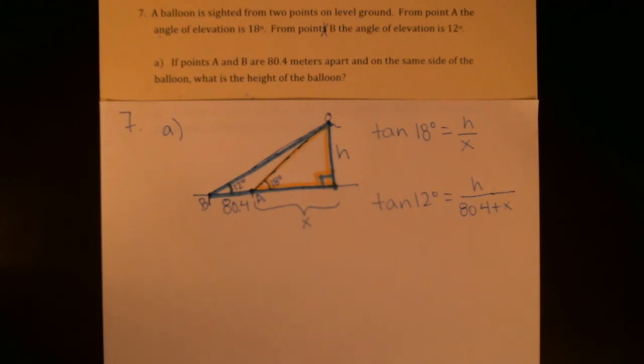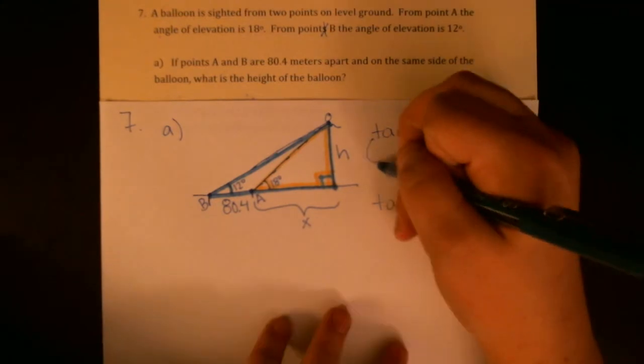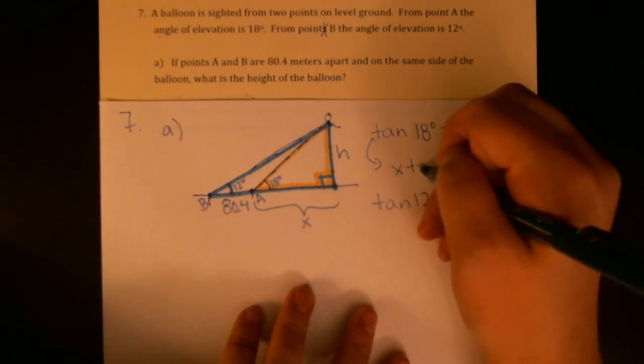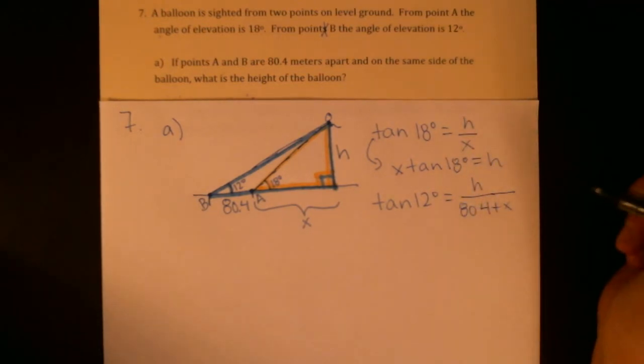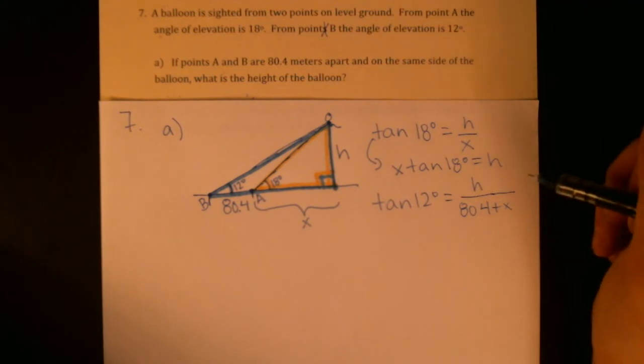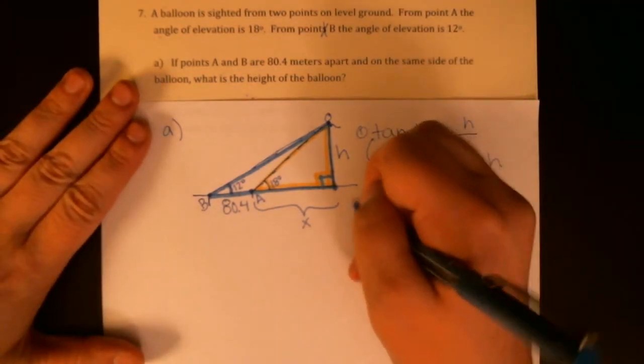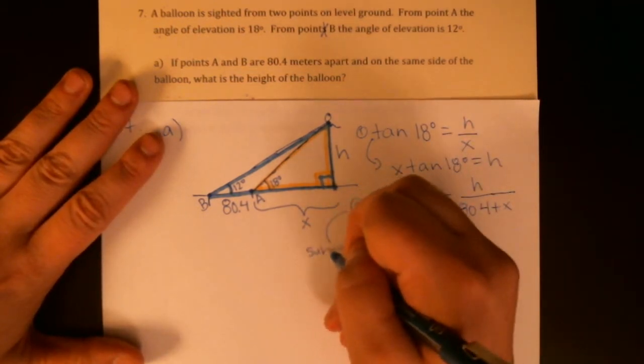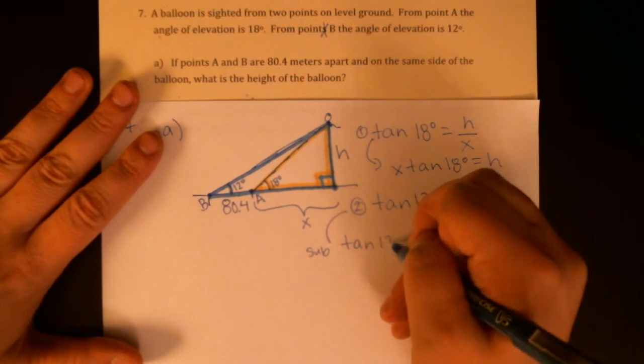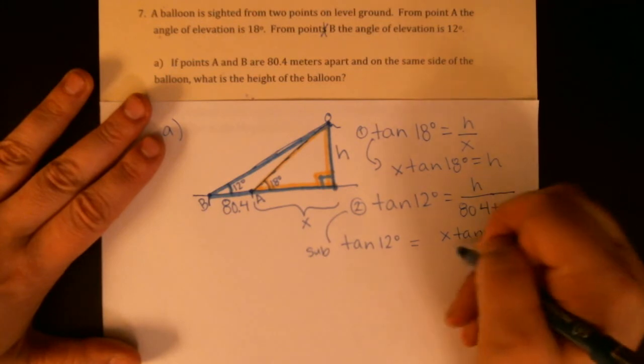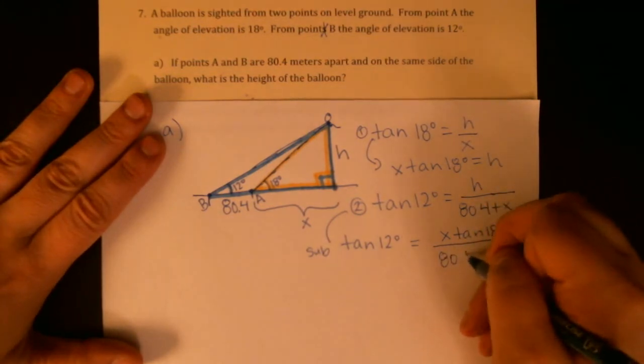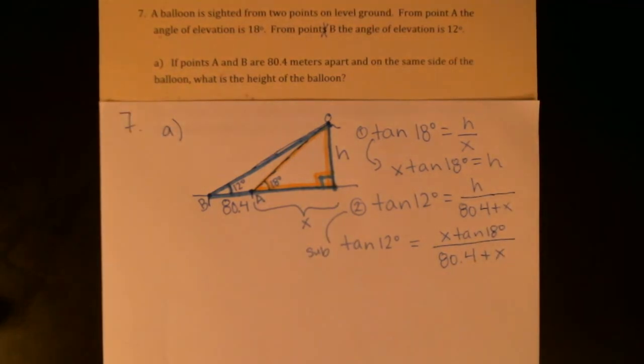I would do this with substitution, so I would say let's just take the first one. It's really easy. Let's solve for h—you can solve for whichever side you want, but h looks the easiest here. So h has to be the same as x times tangent of 18 degrees, which means in equation number two we can substitute, and we get the tangent of 12 degrees is equal to x times the tangent of 18 degrees over 80.4 plus x. And there is a single equation with only one variable that I can definitely work on solving.